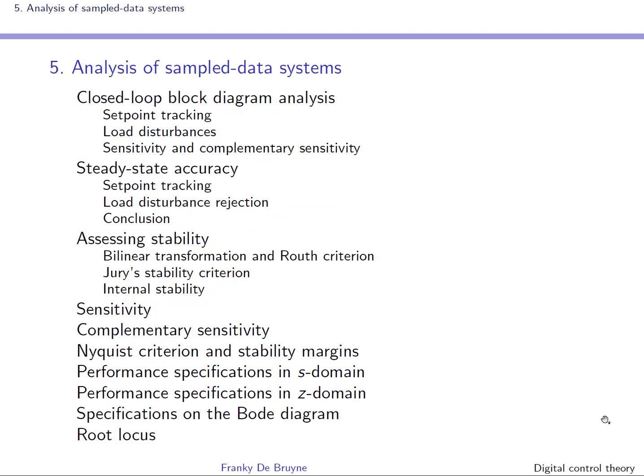In section five, we will introduce the tools for the analysis of sampled data systems. We will see how stability and steady state accuracy, both for setpoint tracking and for disturbance rejection, can be imposed. We will also look at robustness and introduce the sensitivity and the complementary sensitivity. We will look at performance specifications both in the S and the Z domain, and finally we will review the root locus.